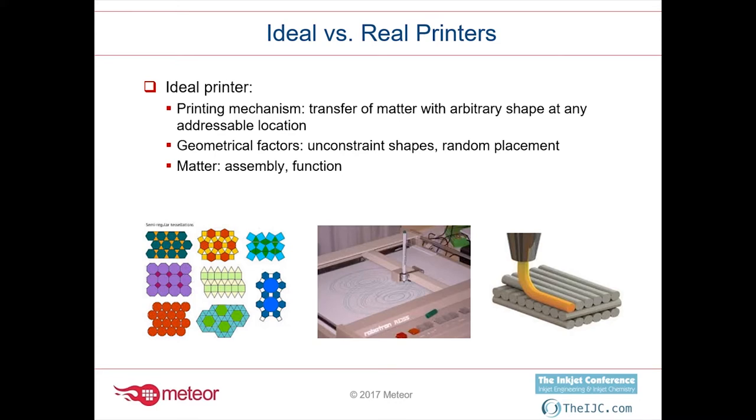Generally we think printing is about giving color, but in 3D printing it might be giving structure to the material. What we see in the real world is that the actual printing mechanism tends to favor cylindrical geometries or spherical geometries, or produces dots. There are material properties behind why that is the case.